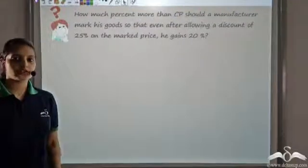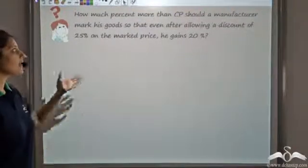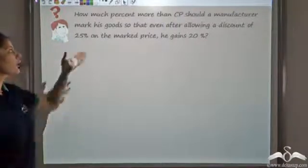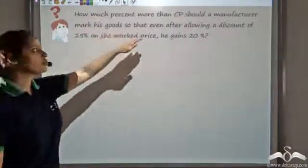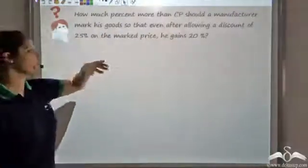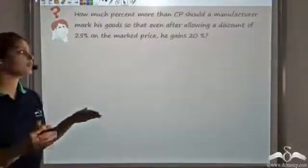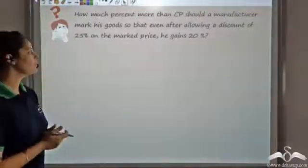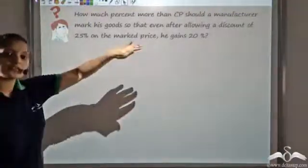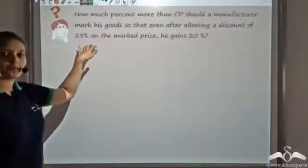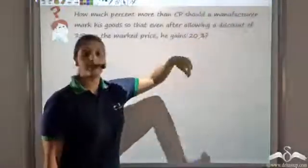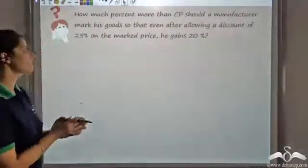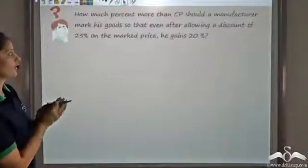Let us try to solve this question. It says how much percent more than the cost price should a manufacturer mark his goods so that even after allowing a discount of 25% on the marked price, he gains 20%. So this shopkeeper is very clever — even after giving a discount of 25%, he is actually gaining 20%. We need to find how much percent more than the cost price he should mark his goods.